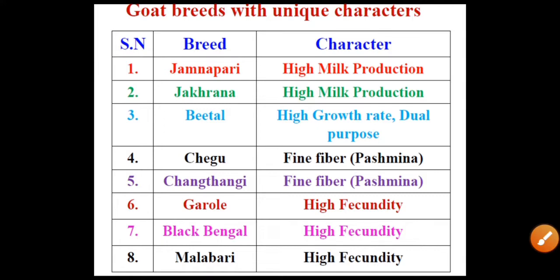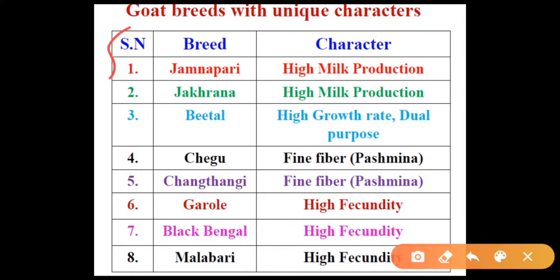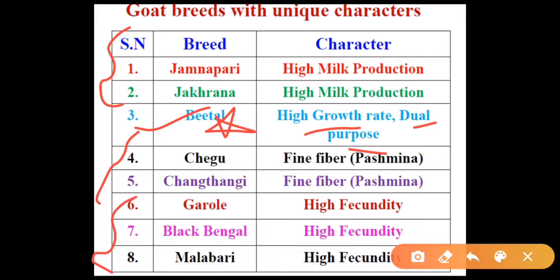Goat breeds with unique characters: Jamunapuri and Zakrana are both high milk production breeds. Beetle has a high growth rate and is a dual-purpose breed — mark as important. Chigu is a fine fiber Pashmina breed, and Changtangi is also a fine fiber Pashmina breed. High fecundity — meaning high fertility rate — is seen in Garouli, Black Bengal, and Malaberry.